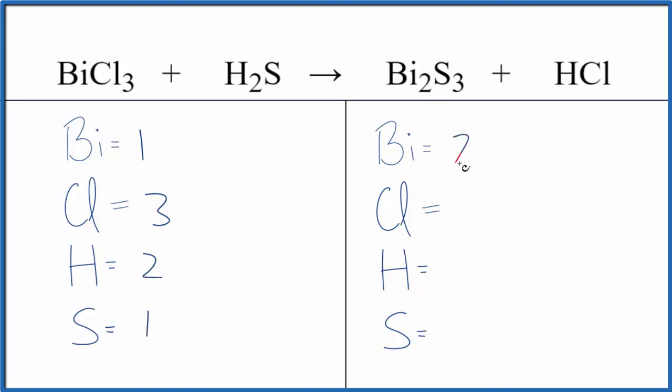On the product side, we have two bismuth, one chlorine, one hydrogen, and three sulfur.